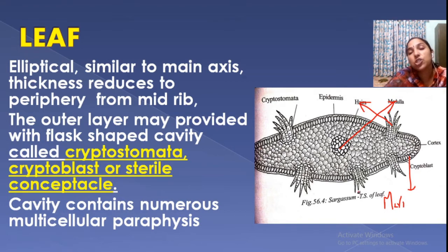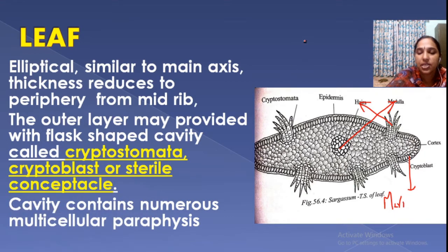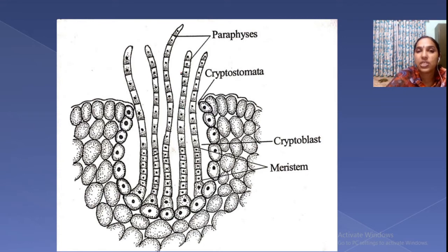The leaf again contains a meristoderm or assimilatory region, cortex, and medulla. Then there is the cryptostomata, also called cryptoblast or sterile conceptacle. This is the structure of the cryptostomata — a cryptoblast that contains hairs known as paraphyses.